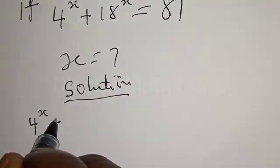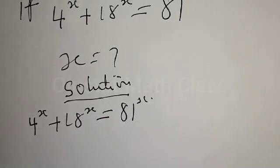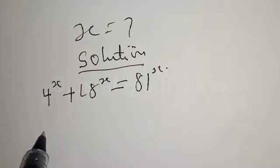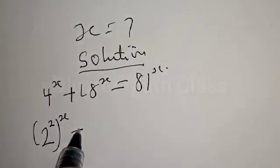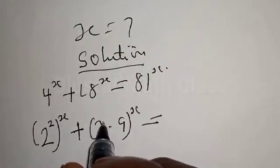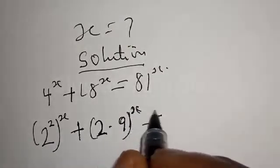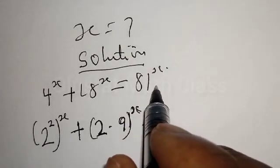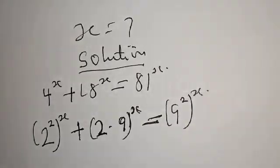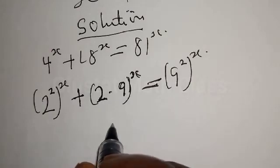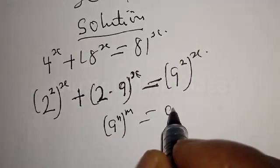We have 4 raised to power x plus 18 raised to power x equal to 81 raised to power x. This can be written as: 4 raised to power x is the same as 2 squared raised to power x, plus 18 equals 2 times 9 raised to power x, equal to 81 which is 9 squared raised to power x. We know that a raised to power n raised to power m can also be expressed as a raised to power n·m.